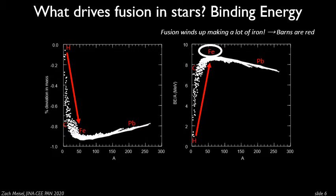Fusion in stars and stellar explosions winds up making a lot of iron. So there's a lot of iron in the universe; therefore, red pigment is plentiful and cheap; therefore, farmers like to buy red paint, and that's why barns are red. This is a simple question we can answer with nuclear astrophysics, which is kind of amazing.